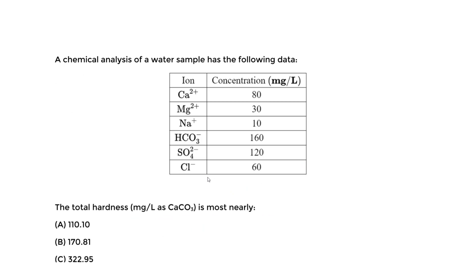Today we have a quick example to find the total hardness. This is a relatively simple example that you want to get right on the FE exam. It relates to softening and water chemistry for the environmental section or the civil environmental section. This is heavy on the environmental section for the environmental FE exam. Here we have a chemical analysis of a water sample with the following data.